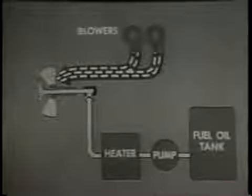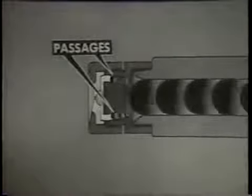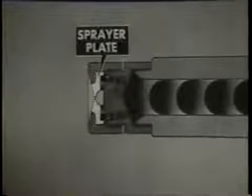The forced draft blowers send a strong blast of air to the burner. The fuel oil pump sends the oil through the heater where the oil is heated to give it good flow quality, then the oil is pumped to the burner. This simplified cutaway of the burner shows how the fuel oil is forced through the burner barrel to the atomizer nozzle, where a series of passages guide the oil to the sprayer plate. The sprayer plate makes the oil rotate at high speed, breaking up the oil into particles. The oil leaves the atomizer as a hollow, mist-like cone or spray.